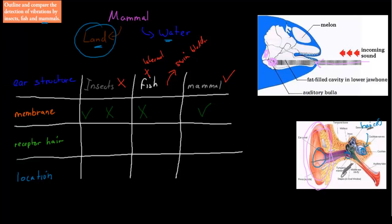Receptor hair: all of them have receptor hair. So these hairs are in all of them. Location: for the mosquito, would be the antenna. For the cricket, it would be the tympanic organ, which would be located close to the knee. In fish, it's the lateral line, so it's the outside of the fish. That's the lateral line.